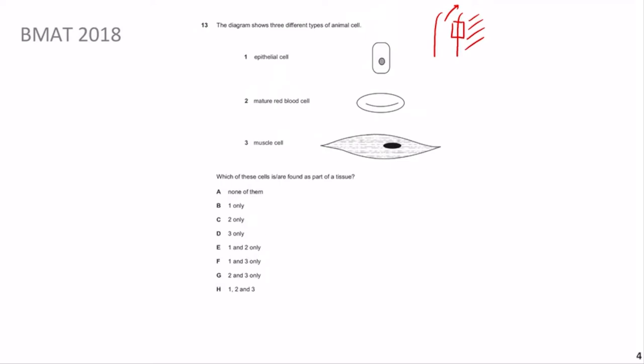The question asks which of these cells are found as part of a tissue. Pause the video now, give it a go, and time yourself - give yourself a minute. To answer this, we need to know what a tissue is: a tissue is a group of cells that work together for a common goal.